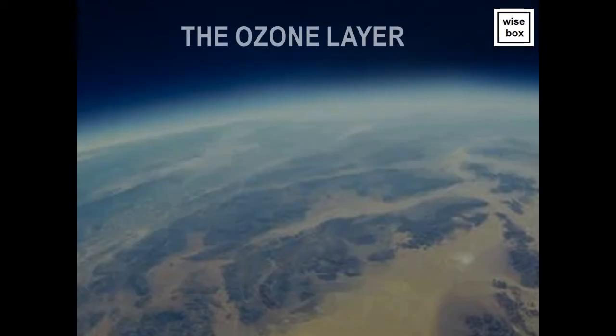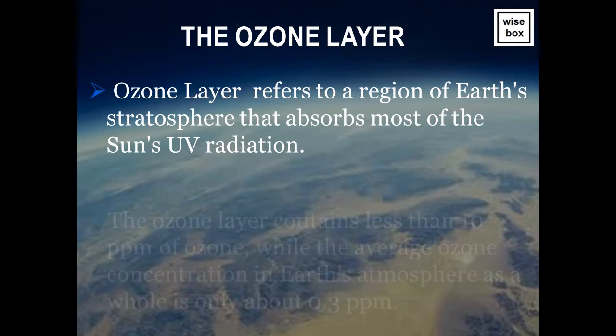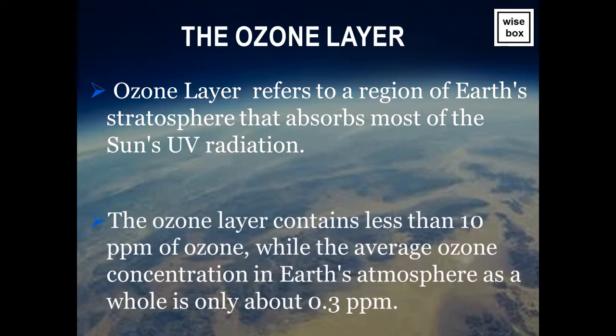The Ozone Layer refers to a region of Earth's stratosphere that absorbs most of the Sun's UV radiation. The ozone layer contains less than 10 parts per million of ozone, while the average ozone concentration in Earth's atmosphere as a whole is only about 0.3 parts per million.